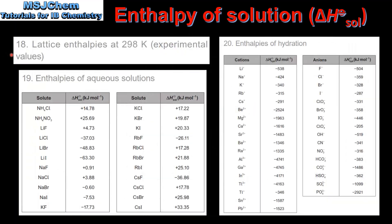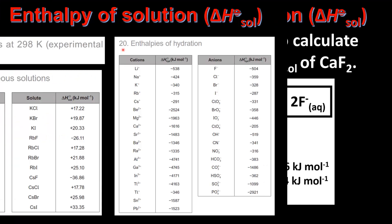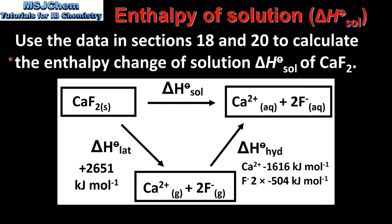Lattice enthalpy values can be found in section 18 of the chemistry data booklet. Enthalpies of aqueous solutions can be found in section 19, and enthalpies of hydration can be found in section 20. So next we look at an example.